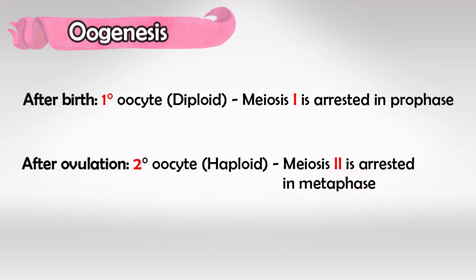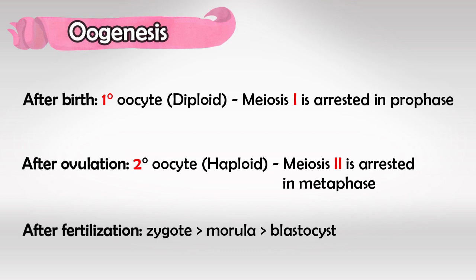The second phase, which is after ovulation, is going to have half chromosomes, so it's a haploid, and it's going to arrest in metaphase of meiosis II. And that will become a zygote after fertilization.